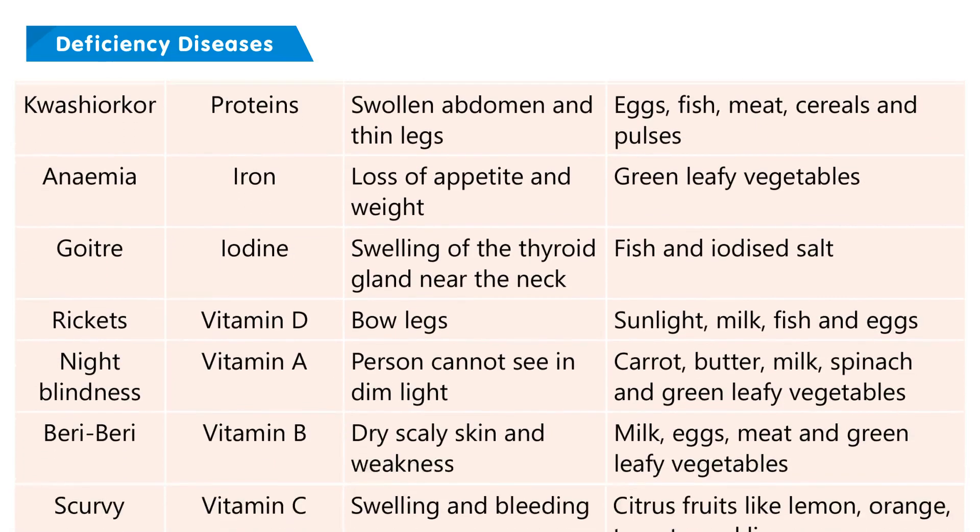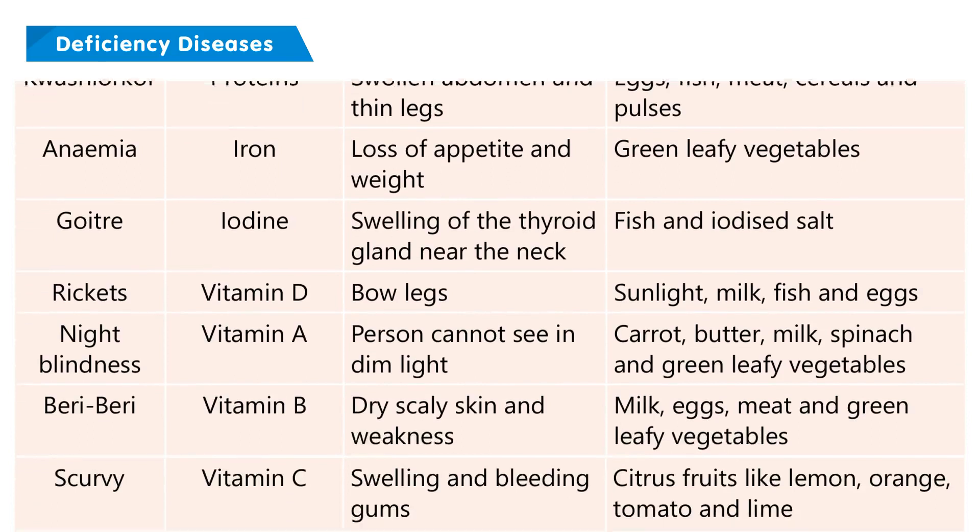Kwashiorkor: deficient nutrient — proteins; symptoms — swollen abdomen and thin legs; sources — eggs, fish, meat, cereals, and pulses.